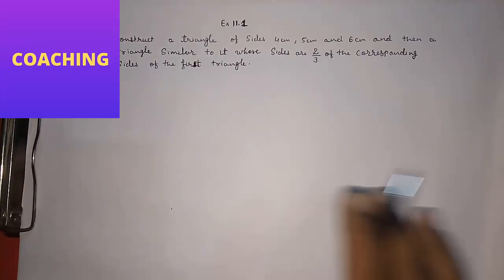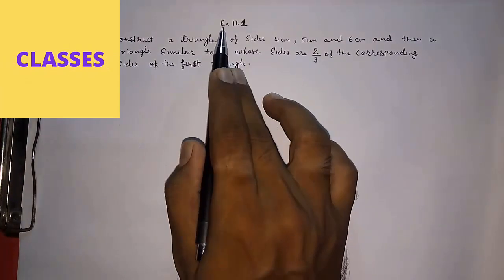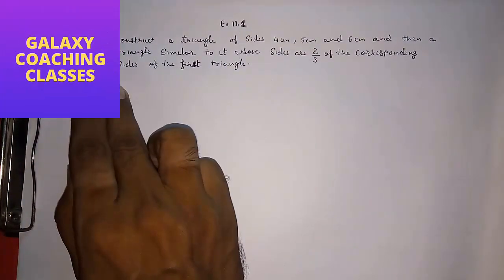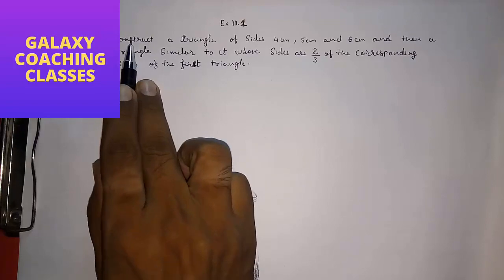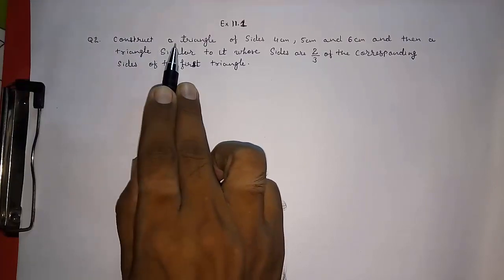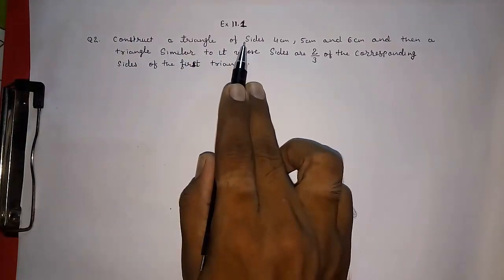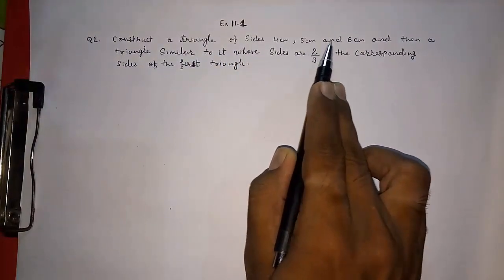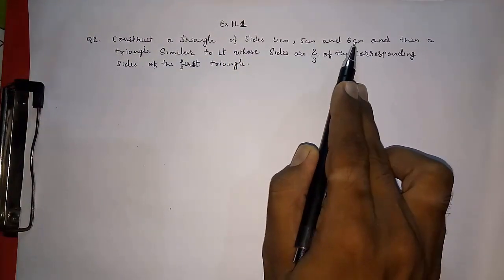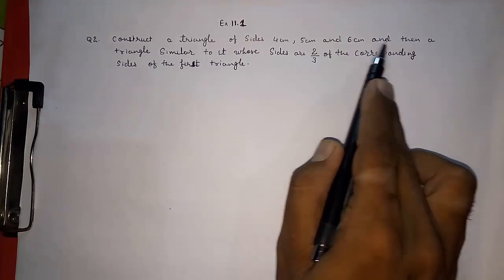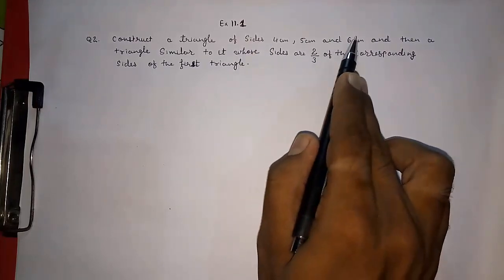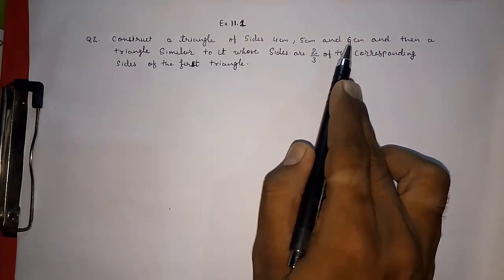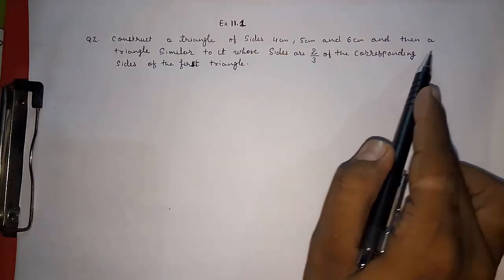Hello friends. Today we are going to solve exercise 11.1, question number 2. Construct a triangle of sides 4 centimeter, 5 centimeter, and 6 centimeter — meaning we have to construct a triangle having sides 4, 5, and 6 centimeter.